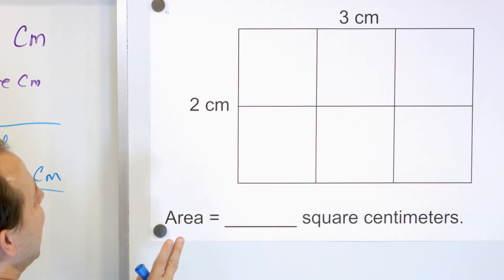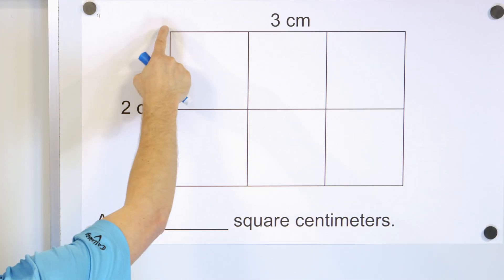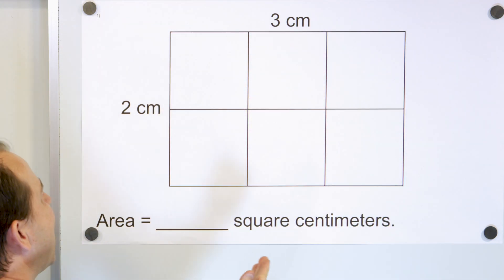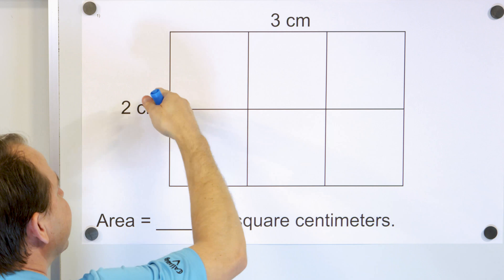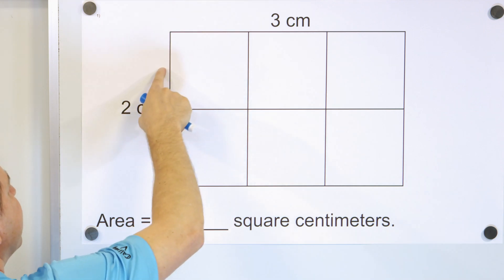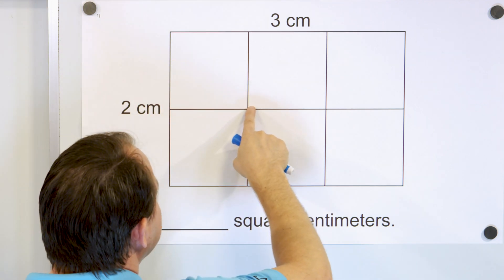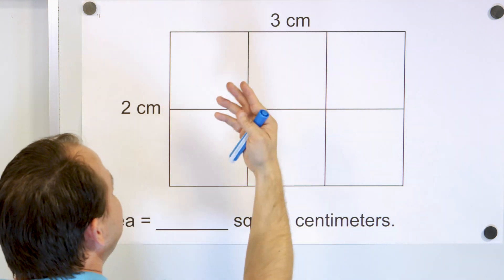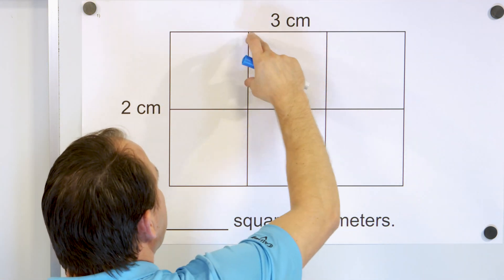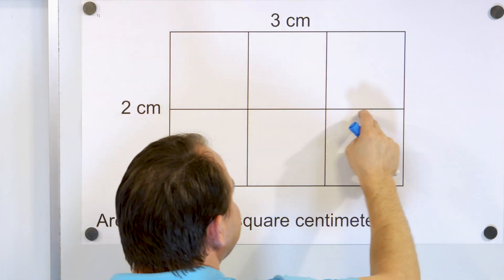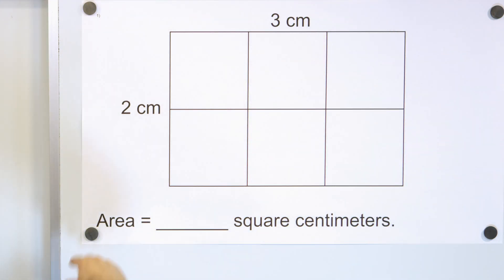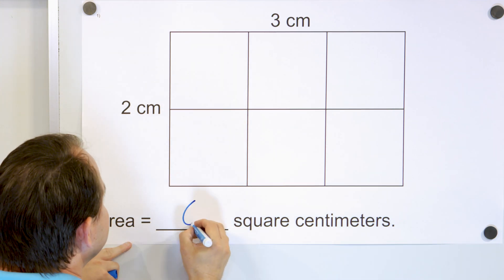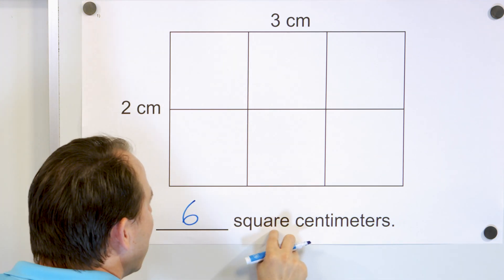Here's our first problem. We have a rectangle that's two centimeters tall by three centimeters wide. We have divided it into square centimeters — each one is one centimeter by one centimeter, so this is a square centimeter. How many do we have? One, two, three, four, five, six. We have six square centimeters.